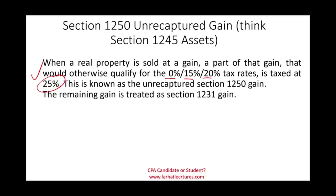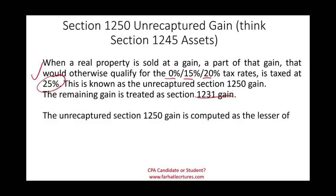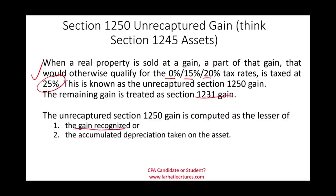Some of the gain could be treated as Section 1231, which we'll see under what circumstances. To compute the unrecaptured Section 1250 gain, we compute the gain recognized and compare it to the accumulated depreciation taken on the asset. This sounds like Section 1245 — and indeed, it is basically like Section 1245: gain recognized versus accumulated depreciation taken.